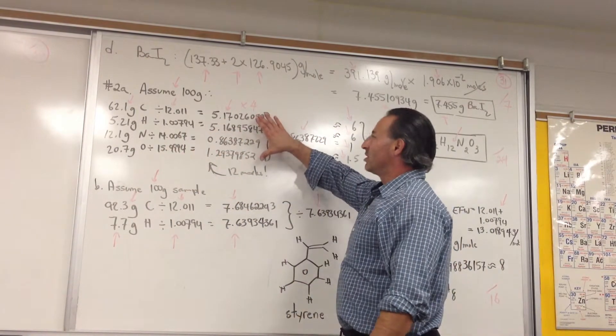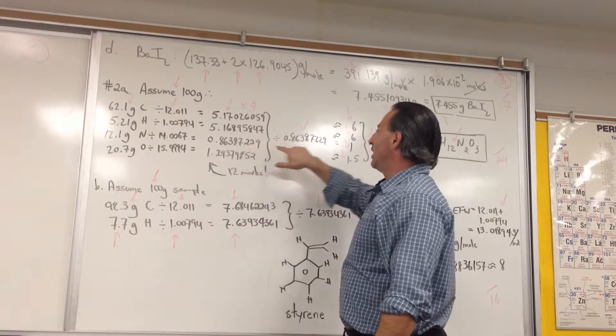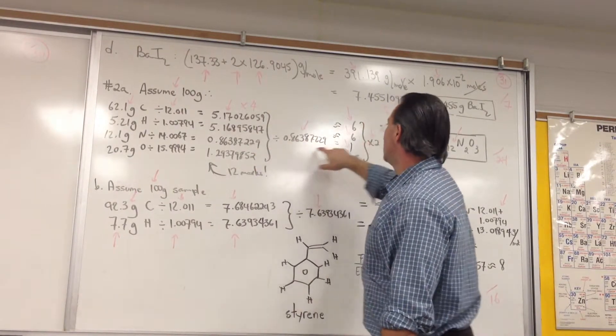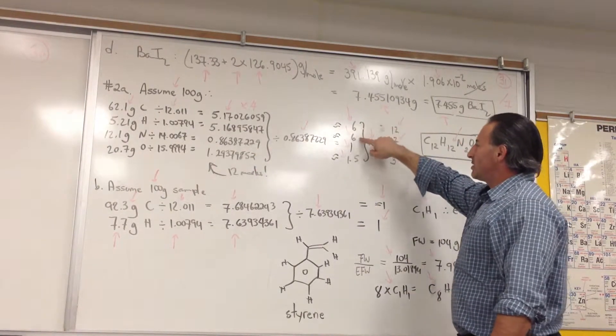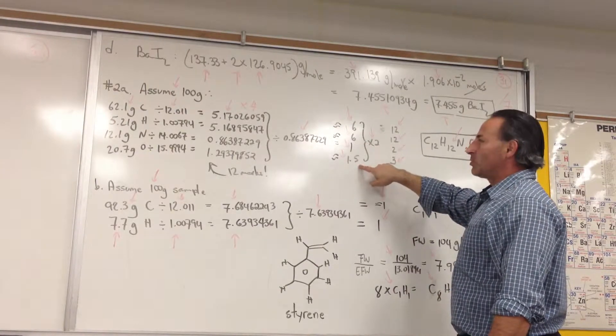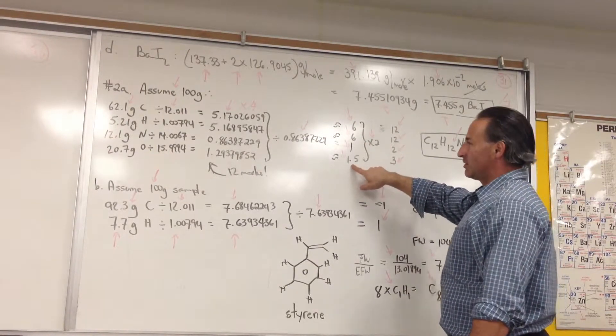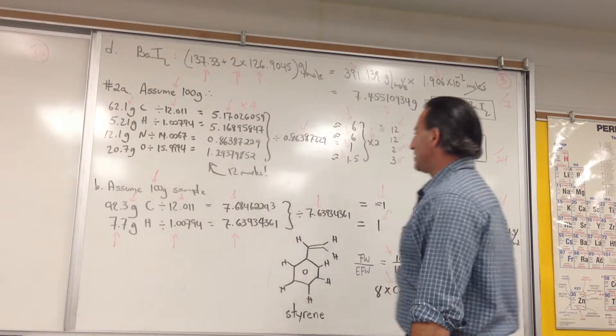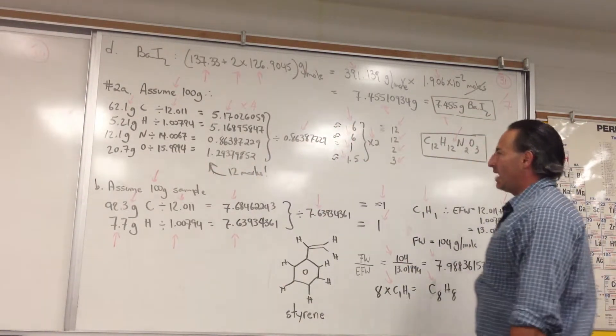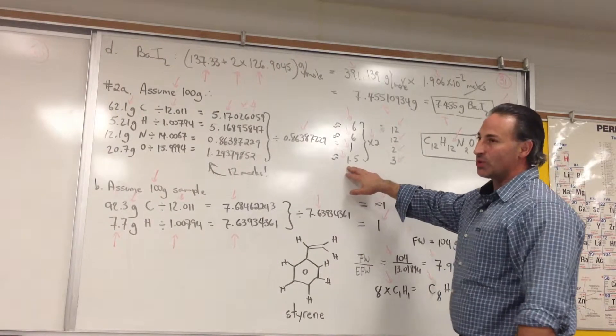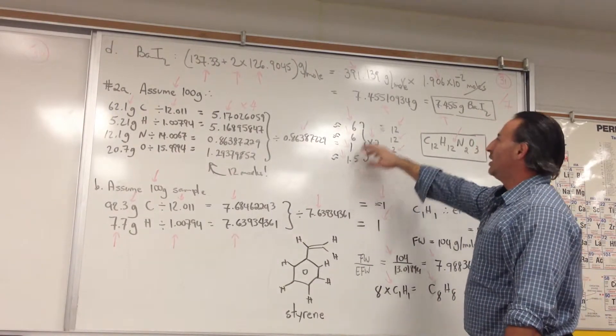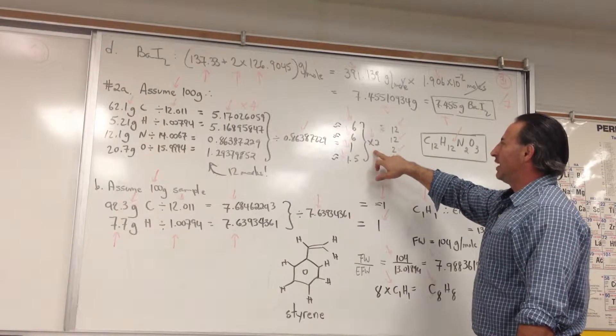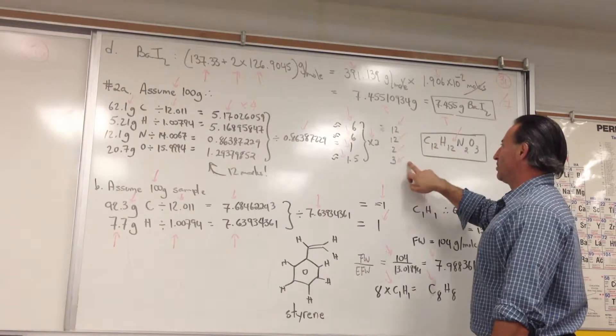Now, we take the smallest number in the group, which is 0.86. And divide all of them by that 0.86. And it gives you 6, 6, 1, and 1.5. Almost all of them are integer values. The only one that's not an integer is the 1.5 here representing the number of moles of oxygen. And since you obviously cannot have 1.5 atoms within a molecule, it makes sense to double the values. So, you get 12, 12, 2, and 3.